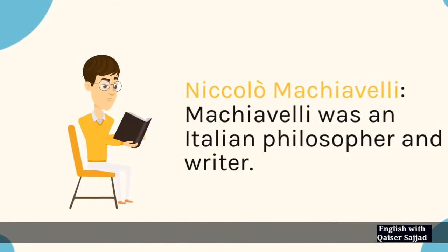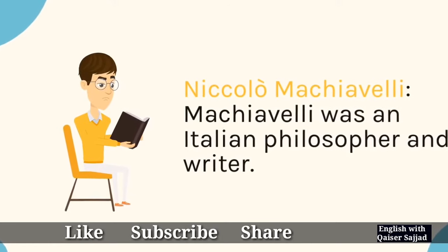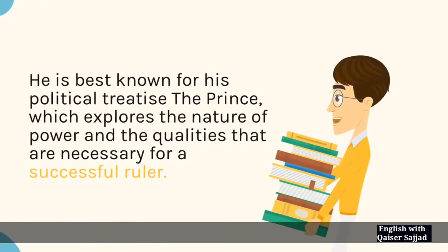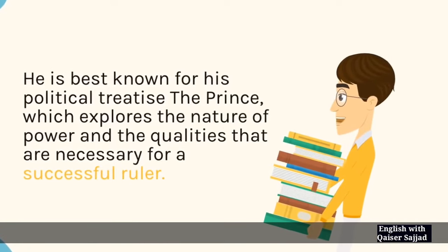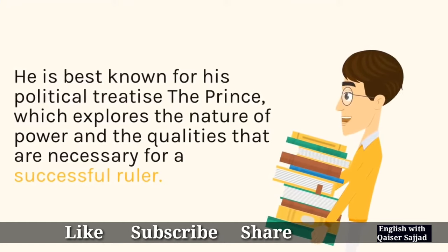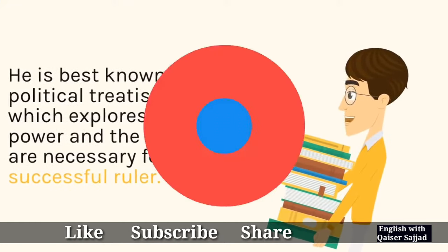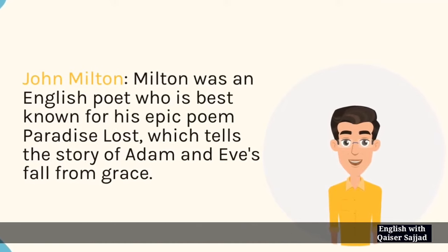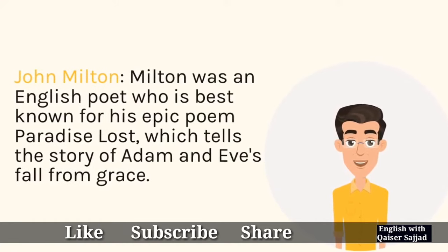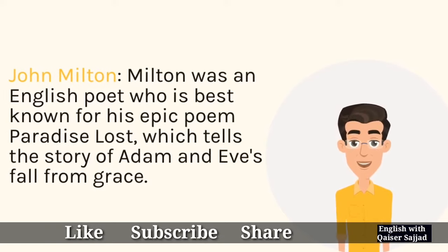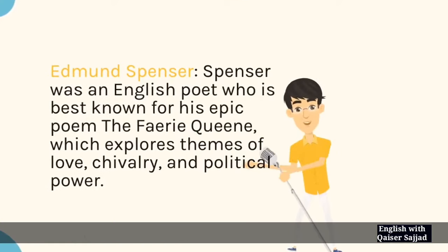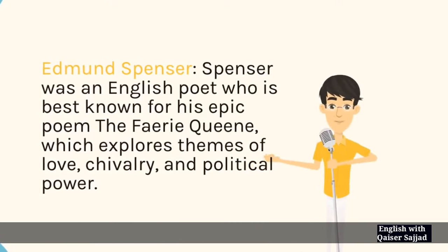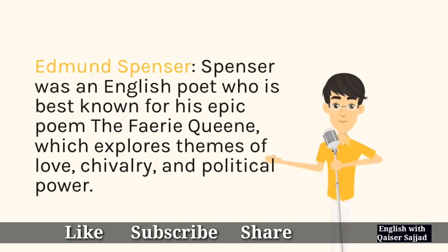Niccolò Machiavelli was an Italian philosopher and writer, best known for his political treatise The Prince, which explores the nature of power and the qualities necessary for a successful ruler. John Milton was an English poet best known for his epic poem Paradise Lost, which tells the story of Adam and Eve's fall from grace. Edmund Spenser was an English poet best known for his epic poem The Faerie Queene, which explores themes of love, chivalry, and political power.